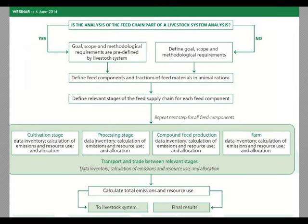After defining system boundaries, you have two options: if the feed chain is part of a livestock system, the goal and scope come from that livestock system; otherwise you define it yourself. After checking again the system boundaries and your allocation method, you then define all the feed components and the fractions of those components in the animal rations.